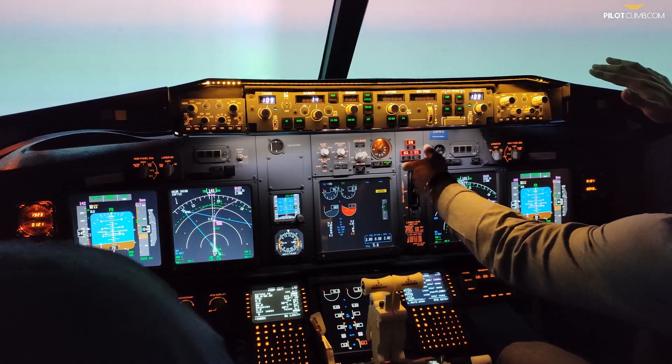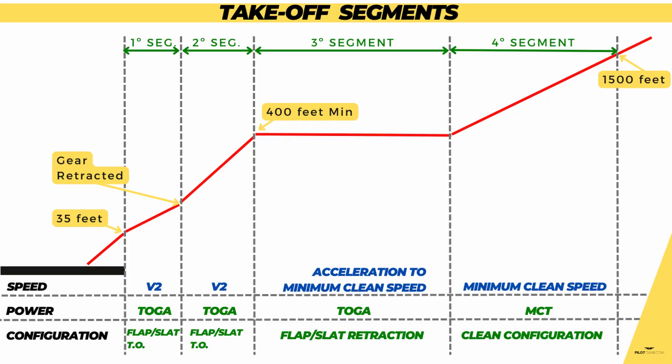This is very critical because you want to reduce drag as soon as possible, since you're in a single-engine condition. The power set during the first take-off segment is take-off power, which could be TOGA, flex temperature, or assumed temperature. The configuration is take-off flaps, initially with gear down, but during the first take-off segment you retract the gear with take-off power set. The climb gradient required for this first take-off segment is essentially zero — there is no specific climb gradient required.